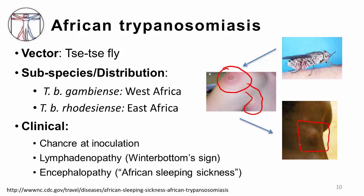Swelling of a lymph node in the neck after acute African trypanosomiasis is classically referred to as Winterbottom's sign. African trypanosomiasis is also known as African sleeping sickness, because the later stages of this disease involve infection of the central nervous system. Patients develop encephalitis and encephalopathy, presenting with increased sleepiness, confusion, and psychiatric symptoms, and can ultimately die from the CNS manifestations.